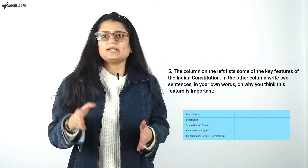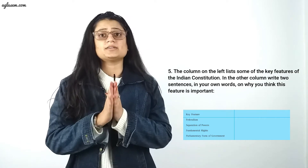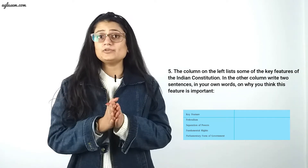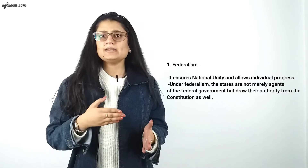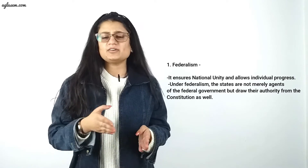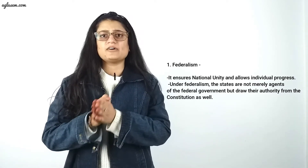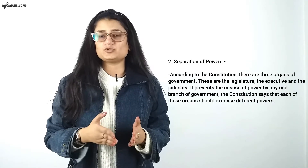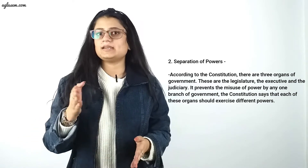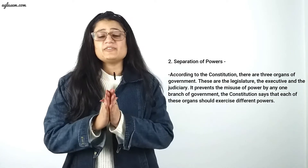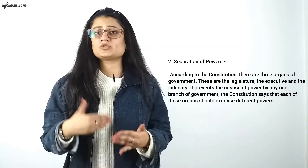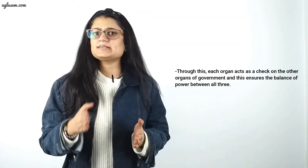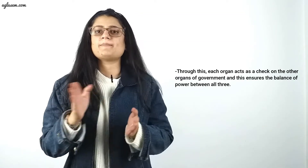Question number five: The column on the left lists key features of the Indian Constitution; write two sentences on why each feature is important. First, Federalism: it ensures national unity and allows individual progress; under federalism, the states are not merely agents of the federal government but draw their authority from the constitution as well. Second, Separation of Powers: there are three organs of government — the legislature, the executive, and the judiciary — and each exercises different powers, acting as a check on the other organs to ensure balance of power.